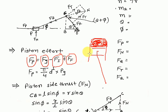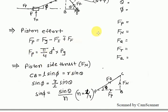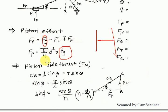The inertia force fi is generated due to the piston mass. It is considered only when the engine is in a vertical condition. If the engine is horizontal, then fp equals fg only. Frictional force is generally neglected. So fp = (π/4) × d² × pg, where d is the cylinder/piston diameter and pg is the gas pressure.